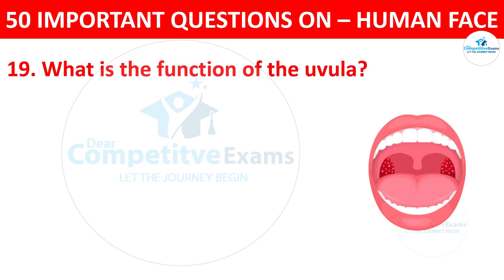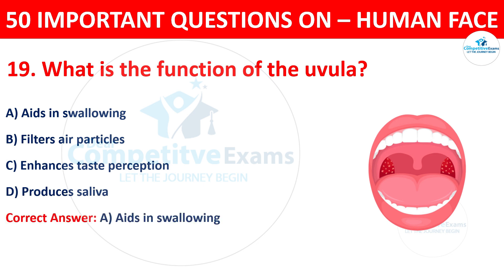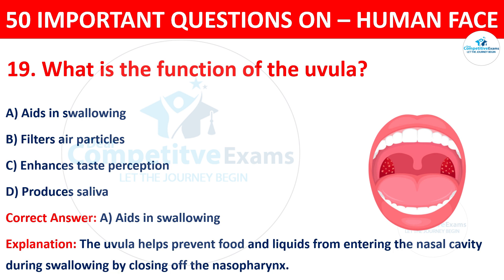Question number nineteen: what is the function of the uvula? The options are aids in swallowing, filters air particles, enhances taste perception, or produces saliva. The correct answer is A, aids in swallowing. The uvula helps to prevent food and liquids from entering the nasal cavity during swallowing by closing off the nasopharynx.